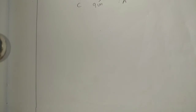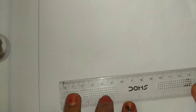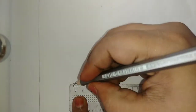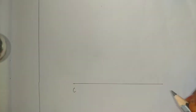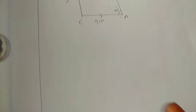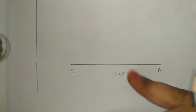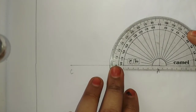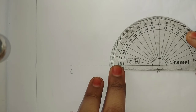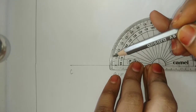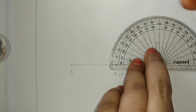First we will draw CA. CA is 9 cm. Next, angle CAR is 70 degree. We mark 70 degree on the protractor: 0, 10, 20, 30, 40, 50, 60, 70. We take the value of 70 degree and mark it.